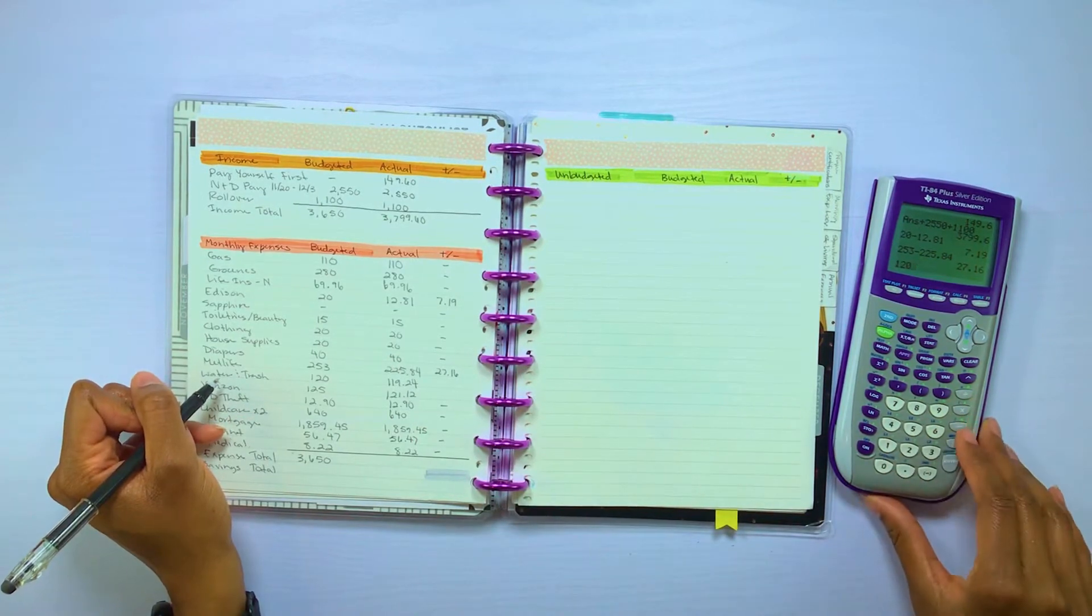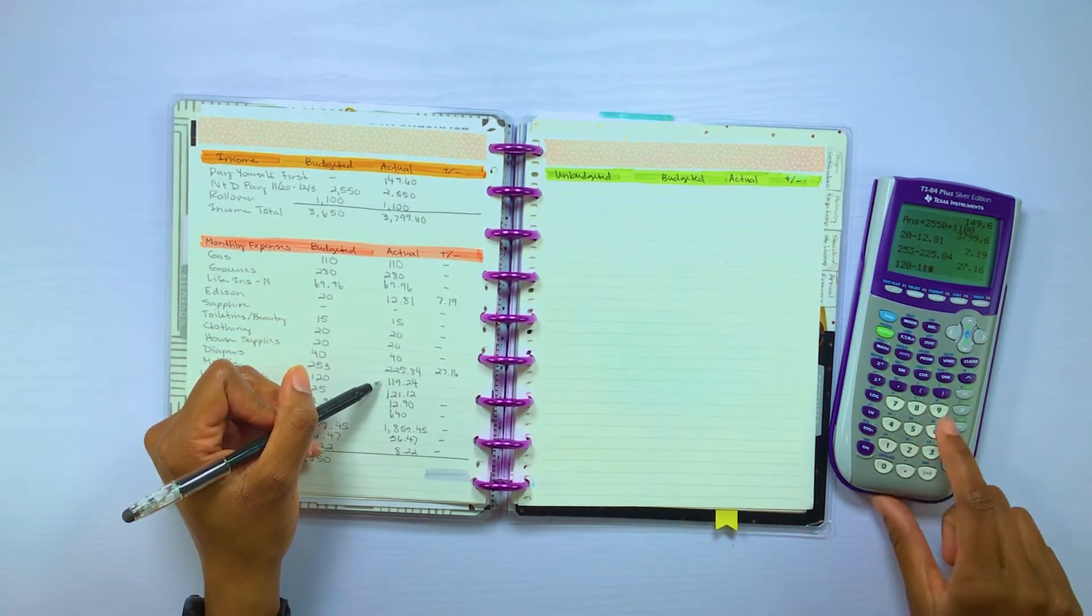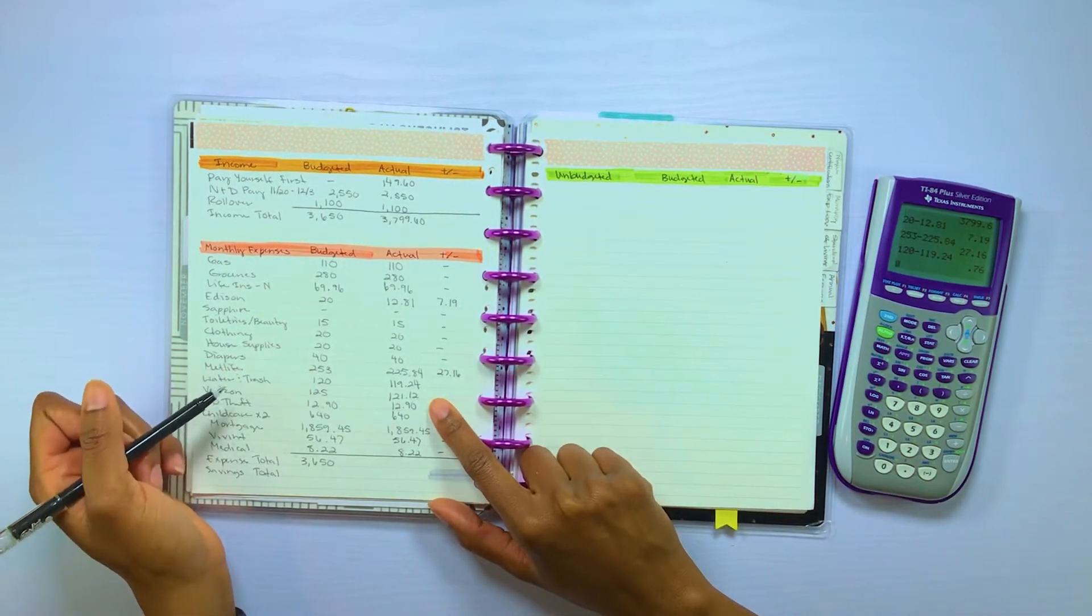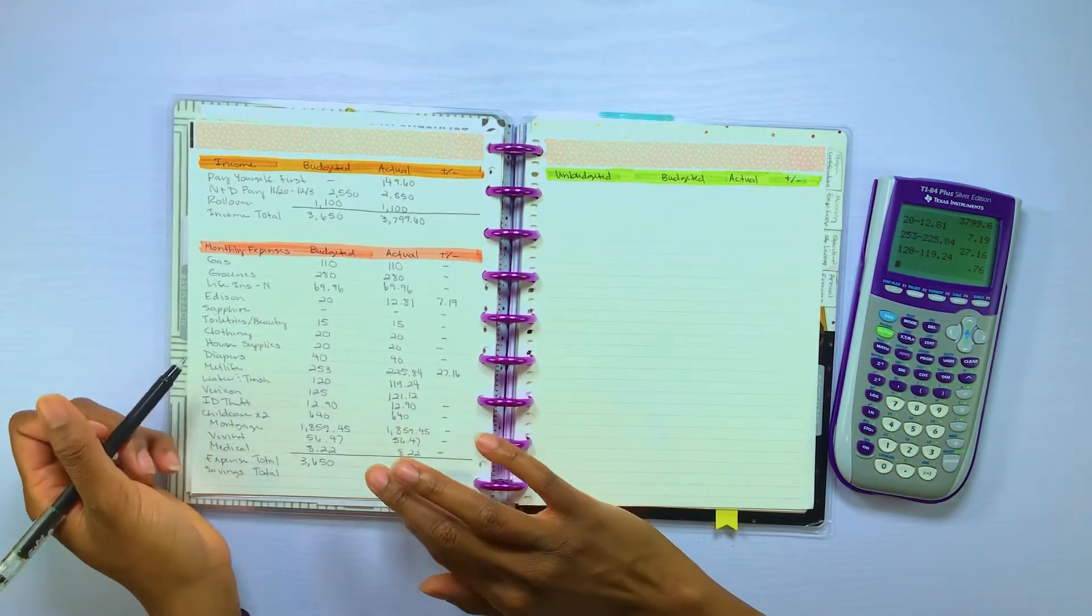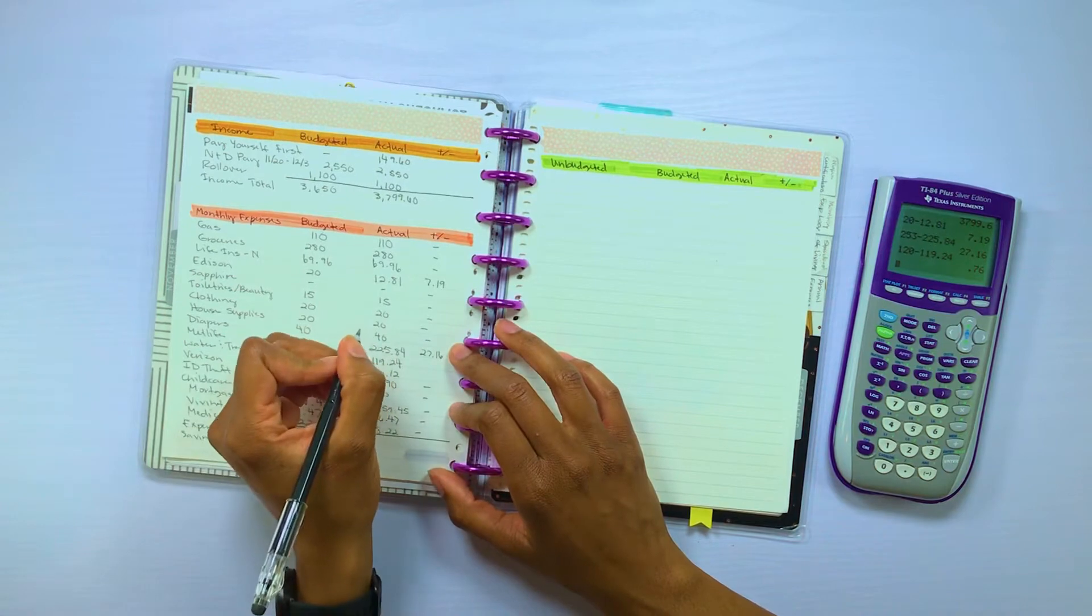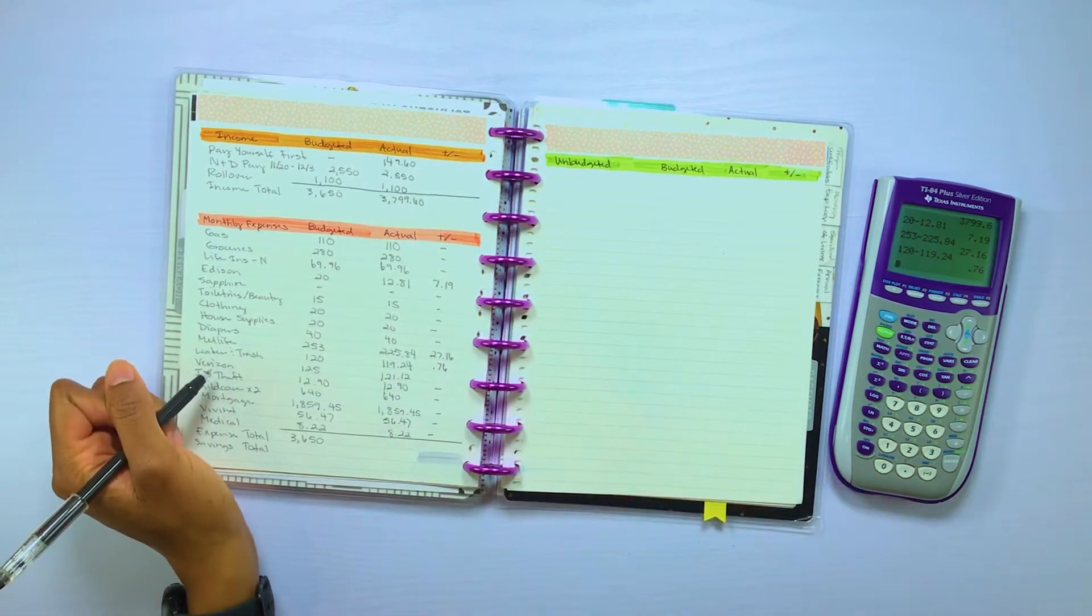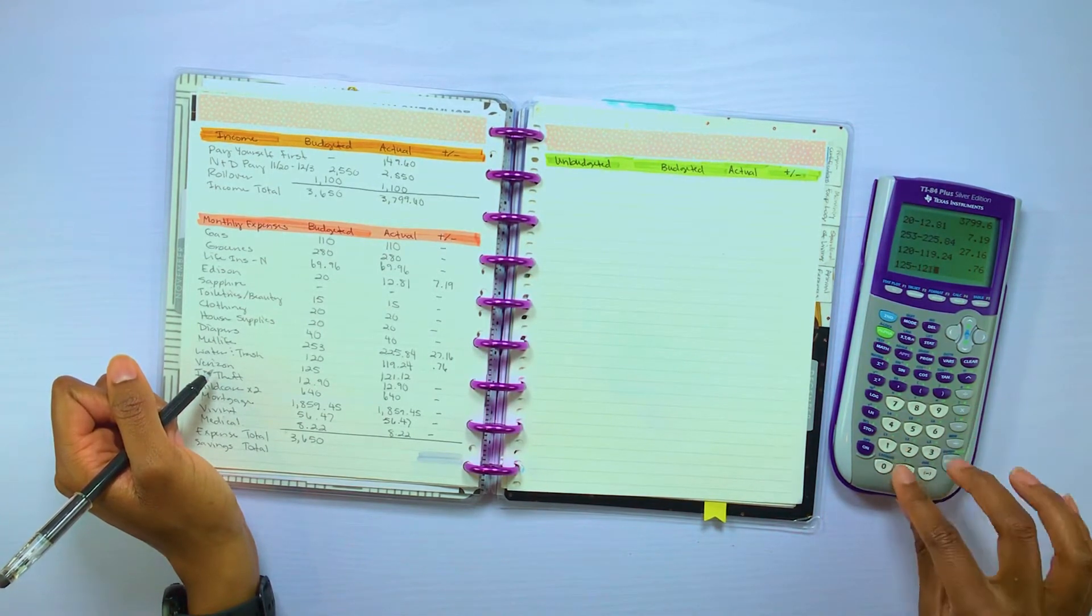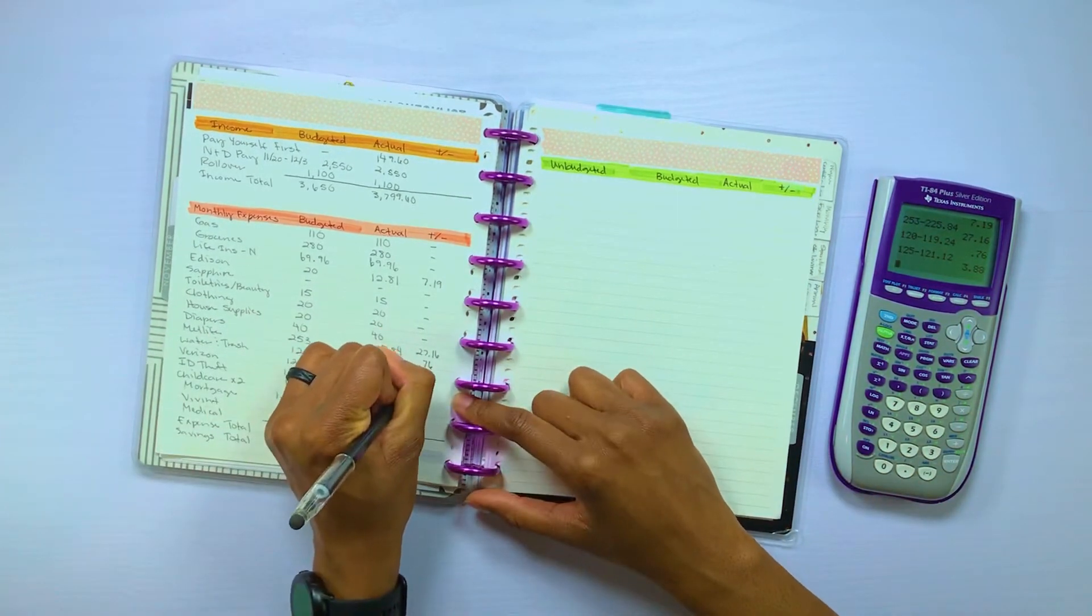Water and trash, I budgeted $120 and then it came out to be $119.24. So I did pay this bill late, but instead of charging me a late fee right then and there, they charge late fees on your next bill. So we were under budget by $0.76. Verizon, I budgeted $125 and it's $121.12, which put us under budget by $3.88.